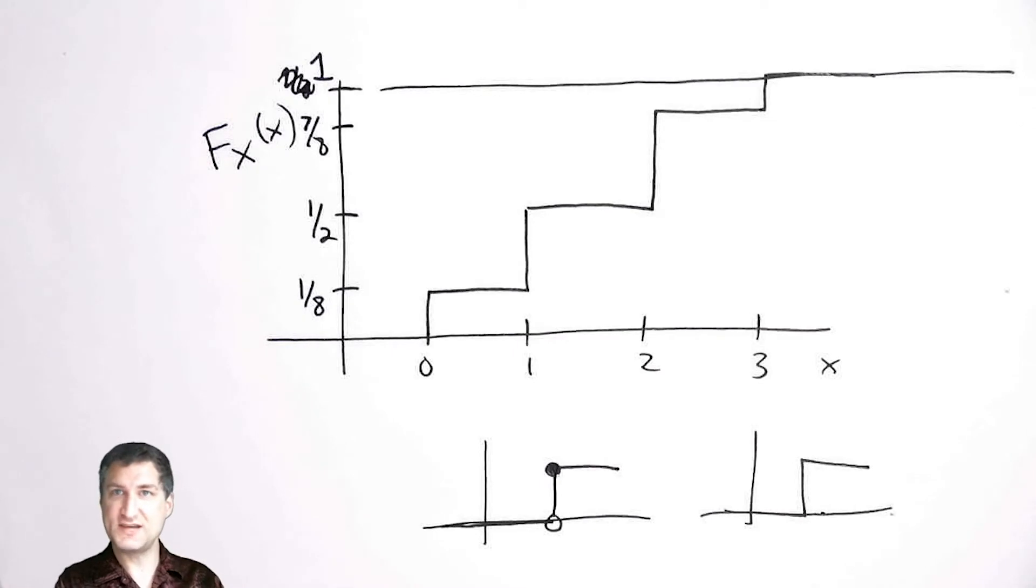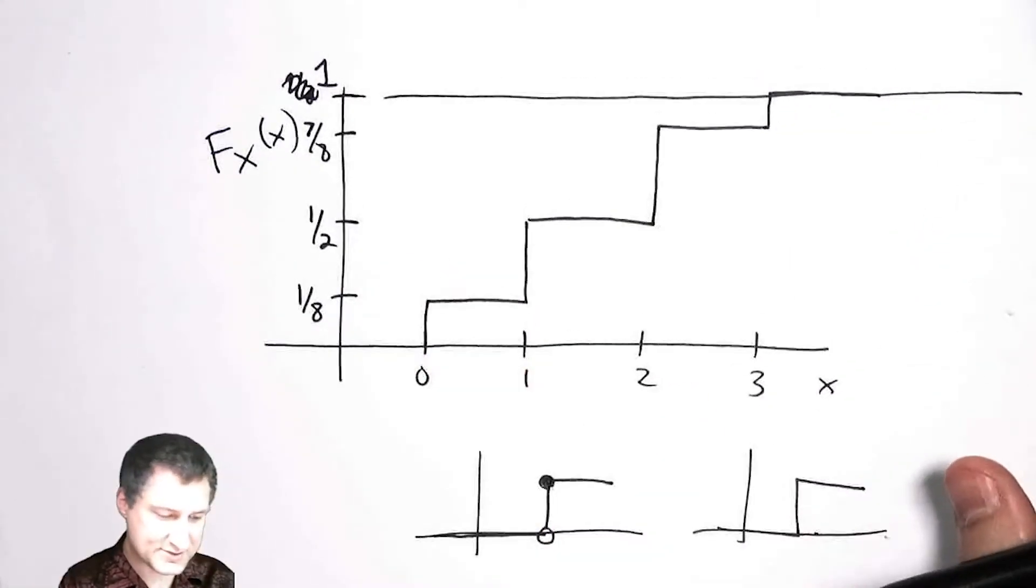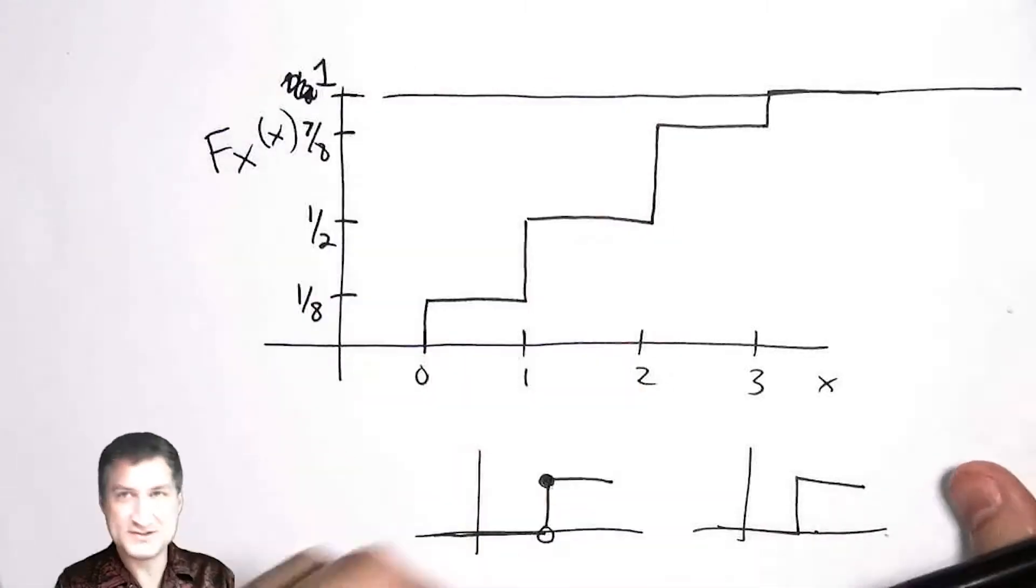And then that's where the CDF stays for the rest of the time. Simple idea, right? Let's do it for a couple of other random variables that we know. And before I do this, let me just say that in fact this definition—the probability that X is less than some value—